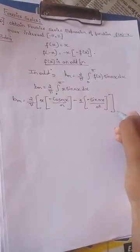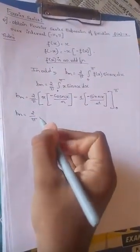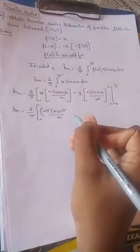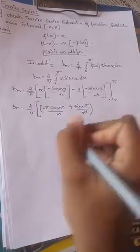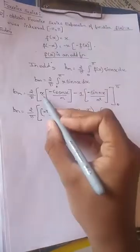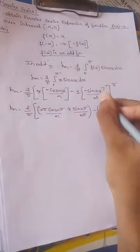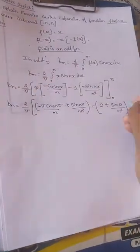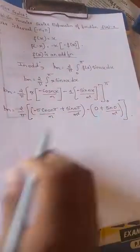Now write the limits and substitute: 2 over pi times [minus pi cos(nπ) over n minus (minus sin(nπ) over n squared)] minus [0 times (minus cos(0)) plus sin(0) over n squared]. Since 0 times anything is 0, the lower limit term becomes 0, and sin(0) over n squared is also 0.